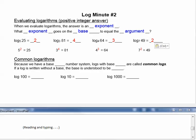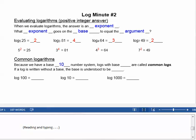Common logarithms. Because we have a base 10 number system, logs with base 10 are called common logs. If a log is written without a base, the base is understood to be 10.